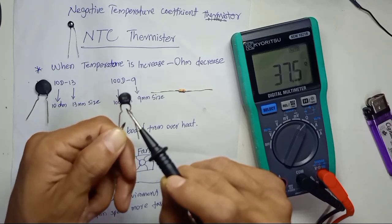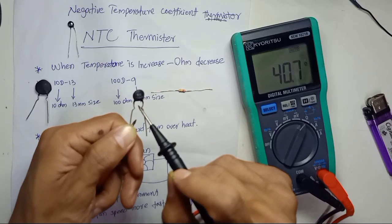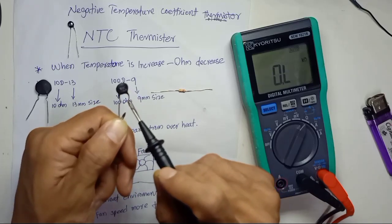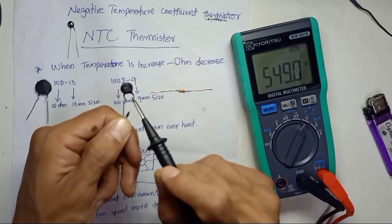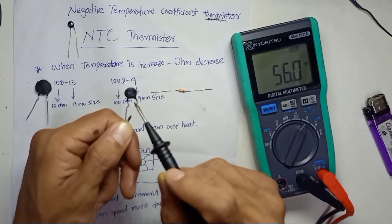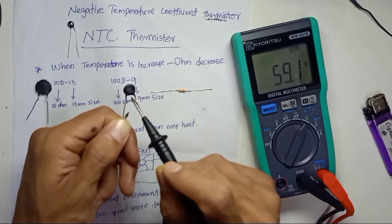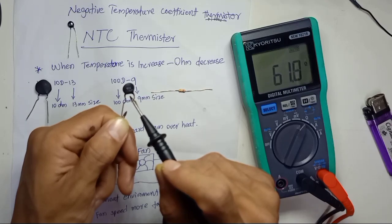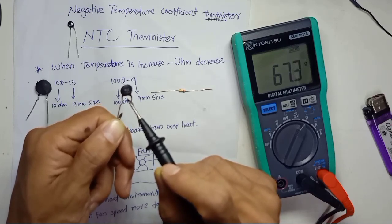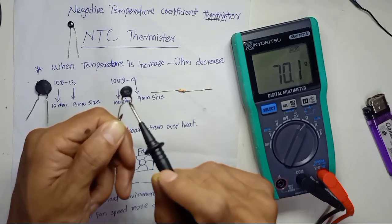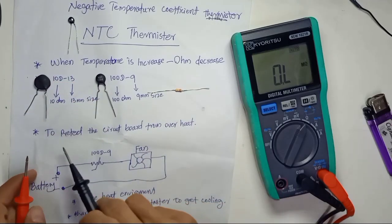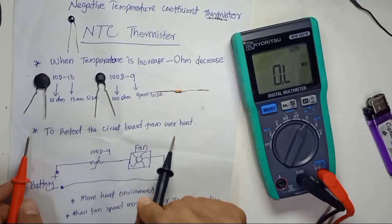The function of this thermistor is: when you apply it to your circuit board and the board gets hot, the thermistor's resistance decreases, triggering the cooler — like a fan in a PC. The built-in fan runs to cool down the board and protect it. Once the board is fully cooled, the fan slows down and eventually stops. This is how the NTC thermistor is used to protect circuit boards from overheating.